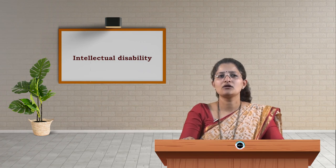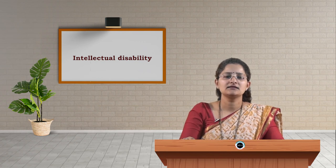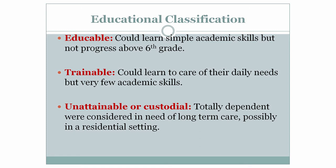The educational classification of mental retardation includes: the educable category, where individuals could learn simple academic skills but not progress above the sixth grade; the trainable category, where they could learn to care for their daily needs but with very few academic skills; and the unattainable or custodial type, who are totally dependent and in considerable need of long-term care, possibly in a residential setting.